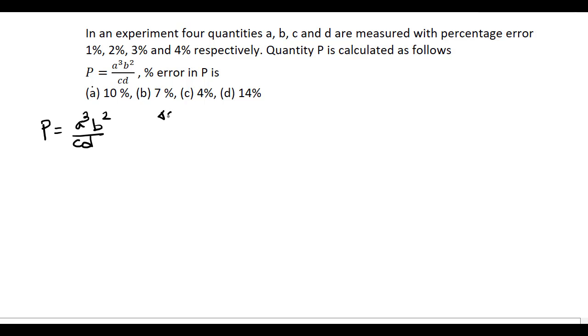So the percentage error of A, that is delta A by A into 100%, is given as 1%. Delta B by B into 100% equals 2%, delta C by C into 100% equals 3%, and delta D by D into 100% equals 4%. So these errors are given.